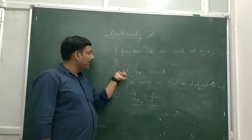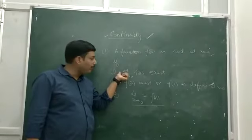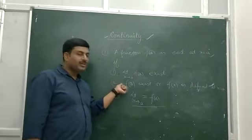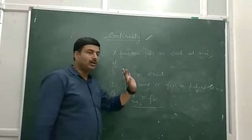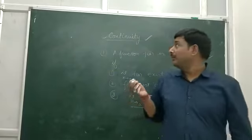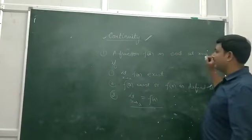you have to find the limit of the function at that point and the value of the function at that point. If both exist and are equal, then you say that the function is continuous at x equal to a.